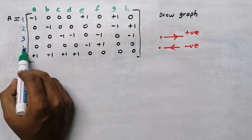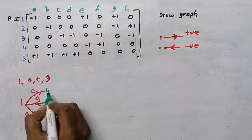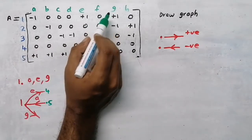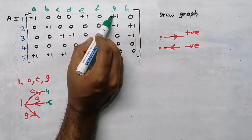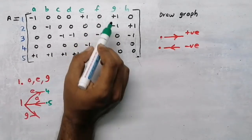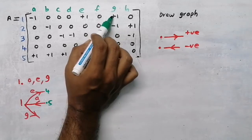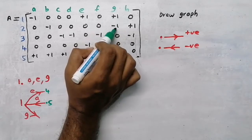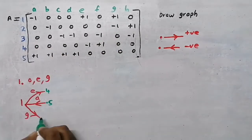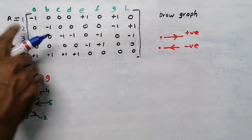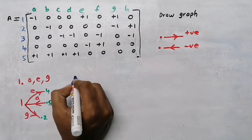Now branch e - plus one is here and minus one is here, so the other end will be at node 4. Now branch g - plus one and minus one: minus one is at node 2, so my other end will be at node 2.